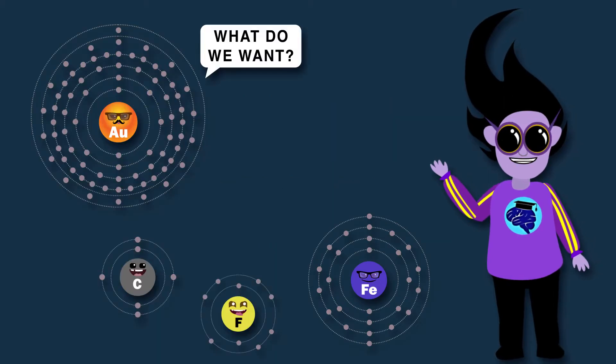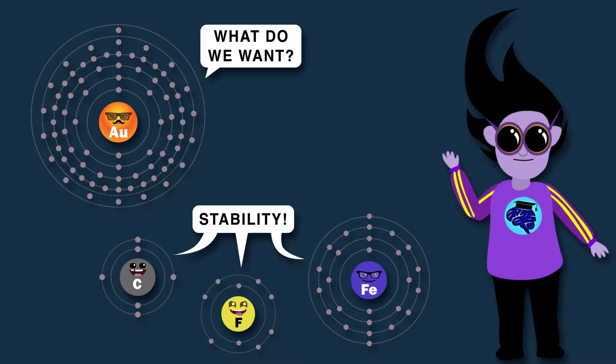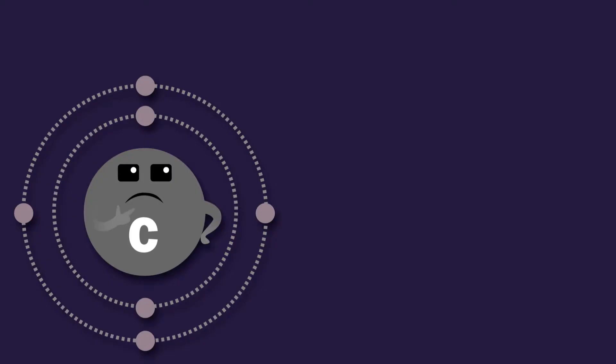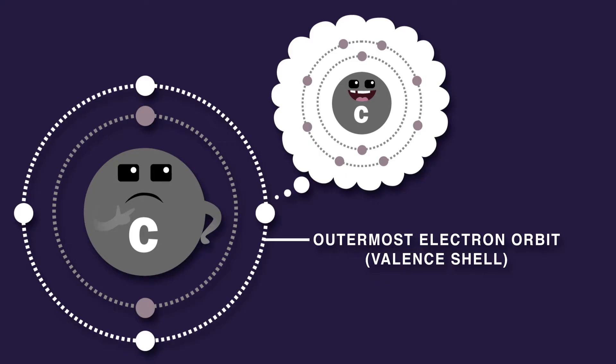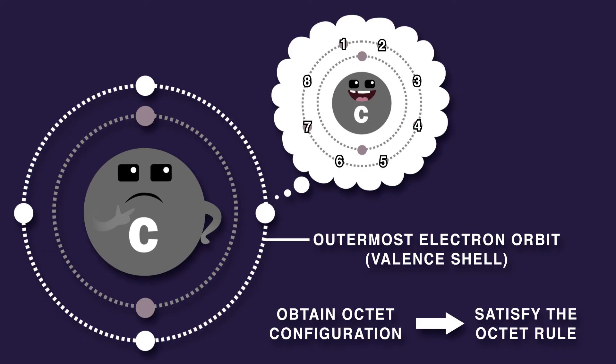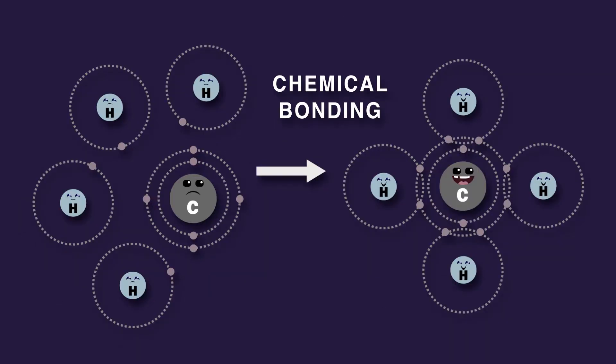Bonding occurs because atoms wish to arrange themselves in the most stable patterns possible. Stability is achieved through the completion of the atom's outermost electron orbits, thus obtaining the octet configuration in the valence shell and satisfying the octet rule. Atoms can do this by joining other atoms via chemical bonds.